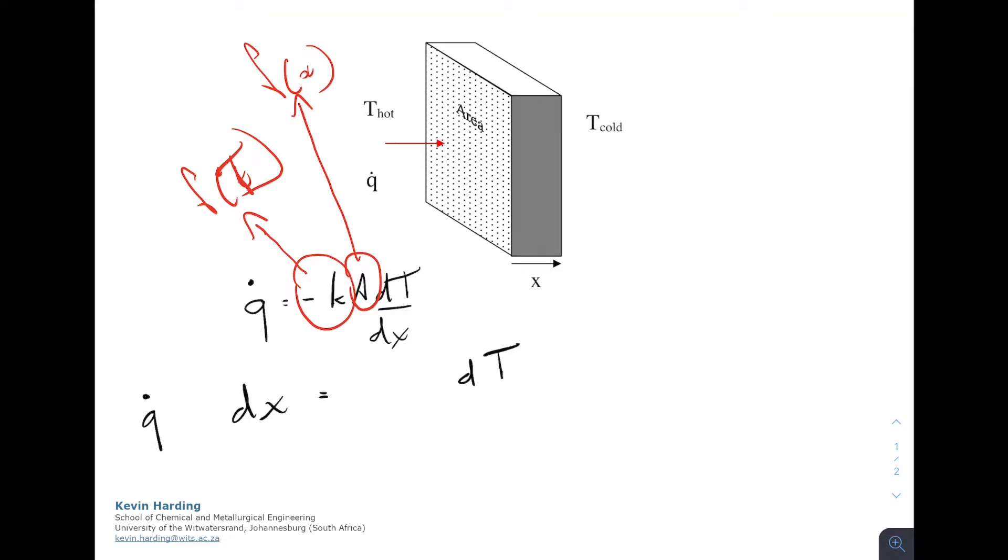If K and A are functions of T or X, we need to put them on the same side. If they are constants, this becomes simple. Most commonly you'll see minus Ka under Q multiplied by dx equals dT. With no functions of X and T, we can simply integrate from X equals 0 to X equals L, and from temperature hot to temperature cold.